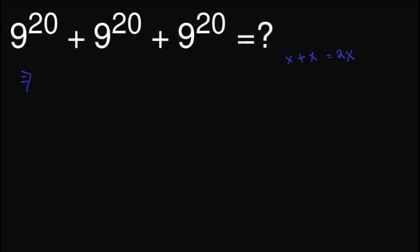So applying this same concept out here, 9 raised to 20 plus 9 raised to 20 plus 9 raised to 20, if we treat 9 raised to 20 as a single term, then this will become 3 times 9 raised to 20.